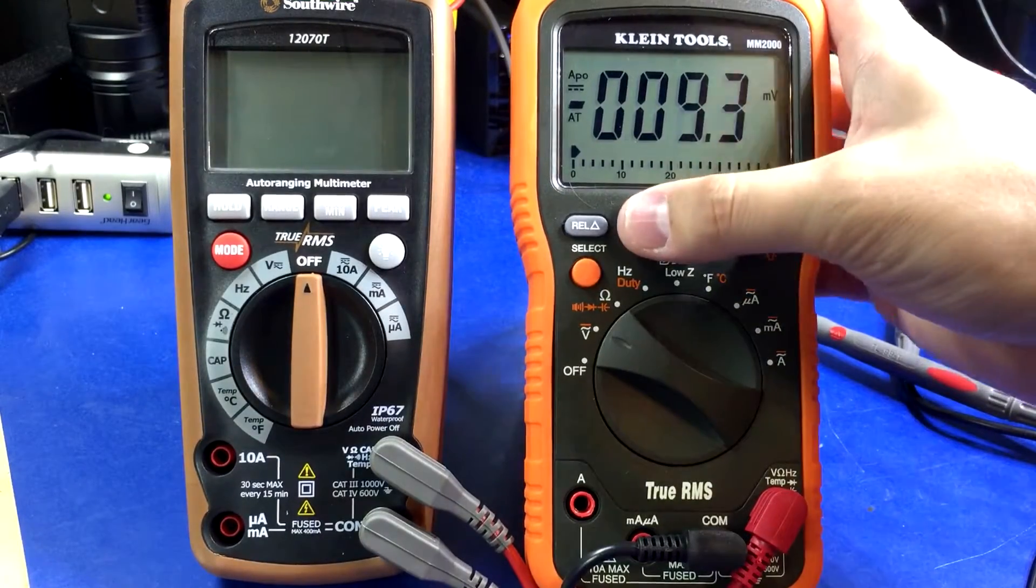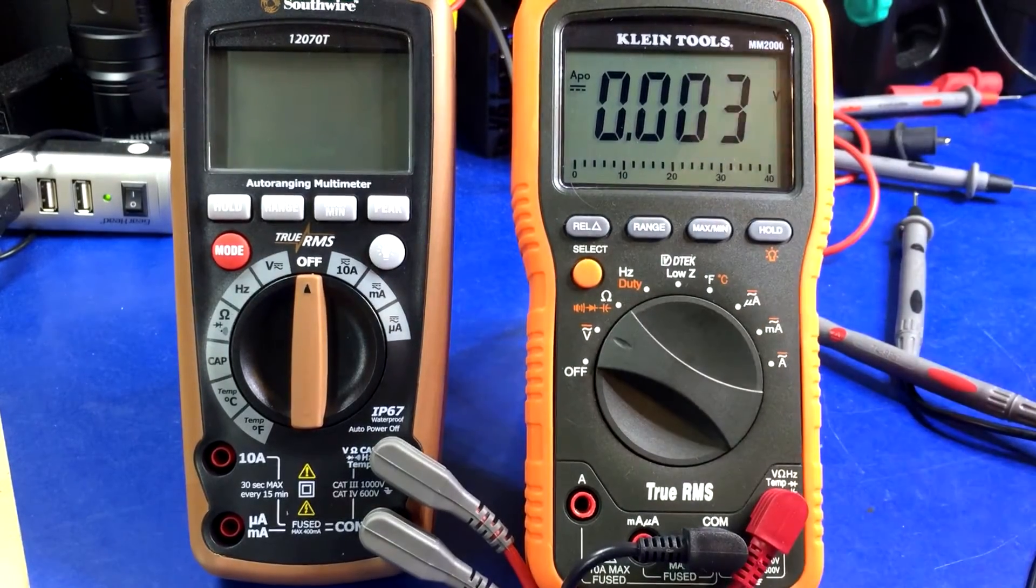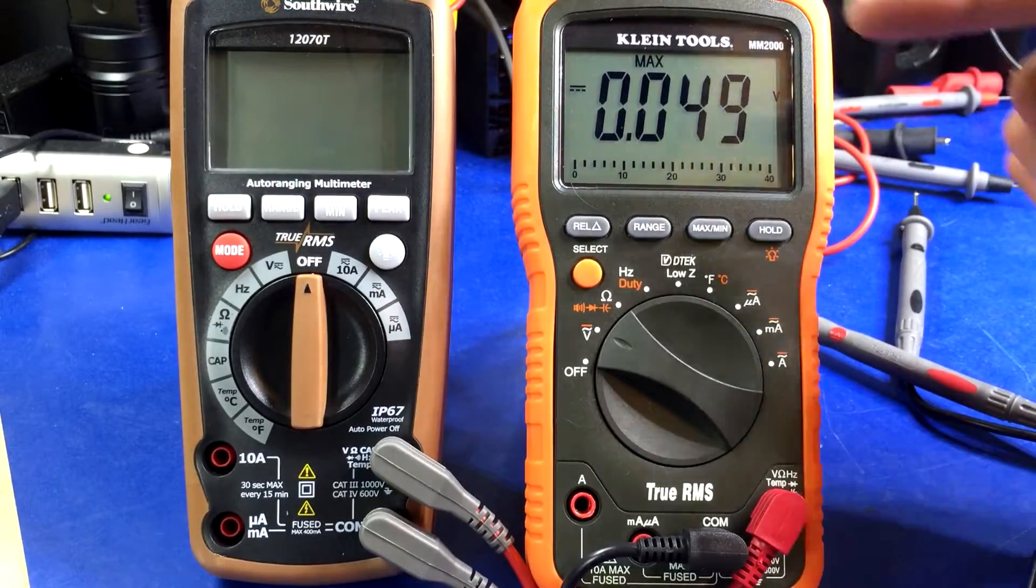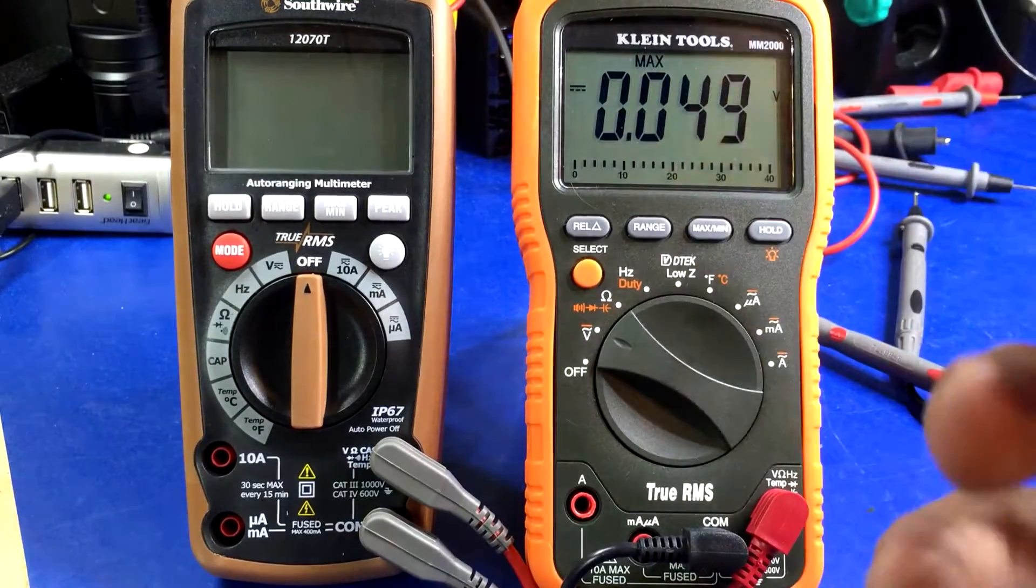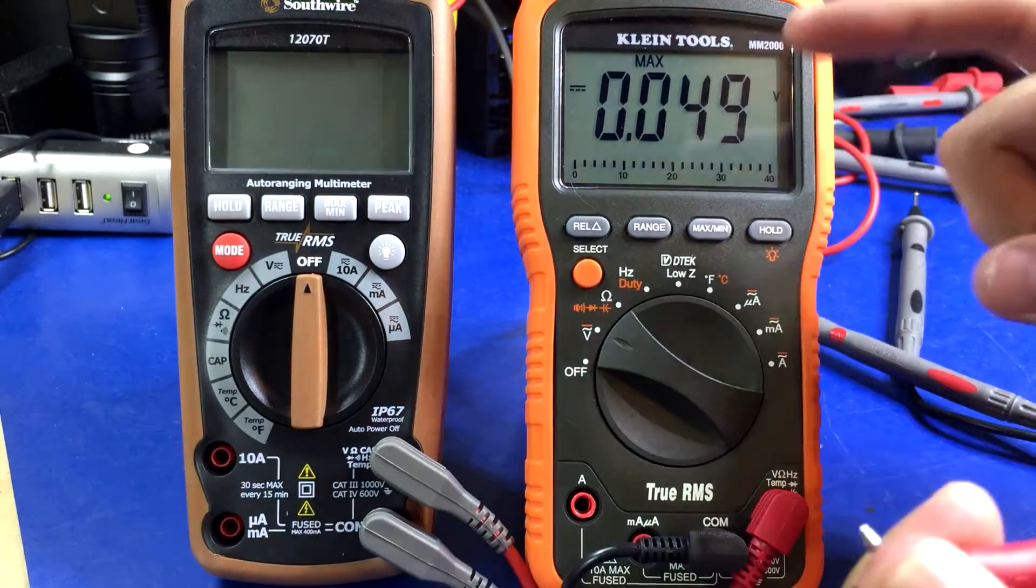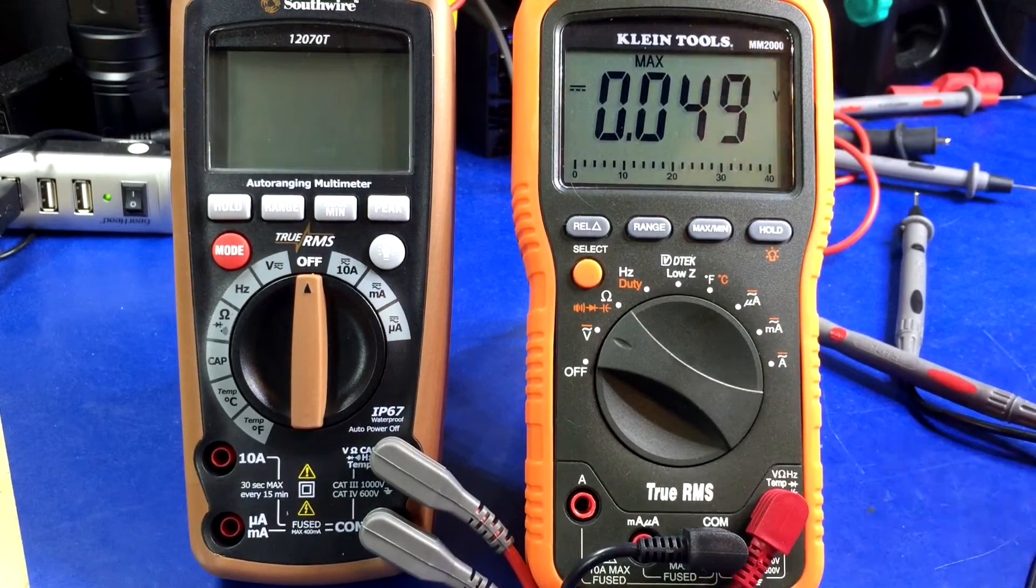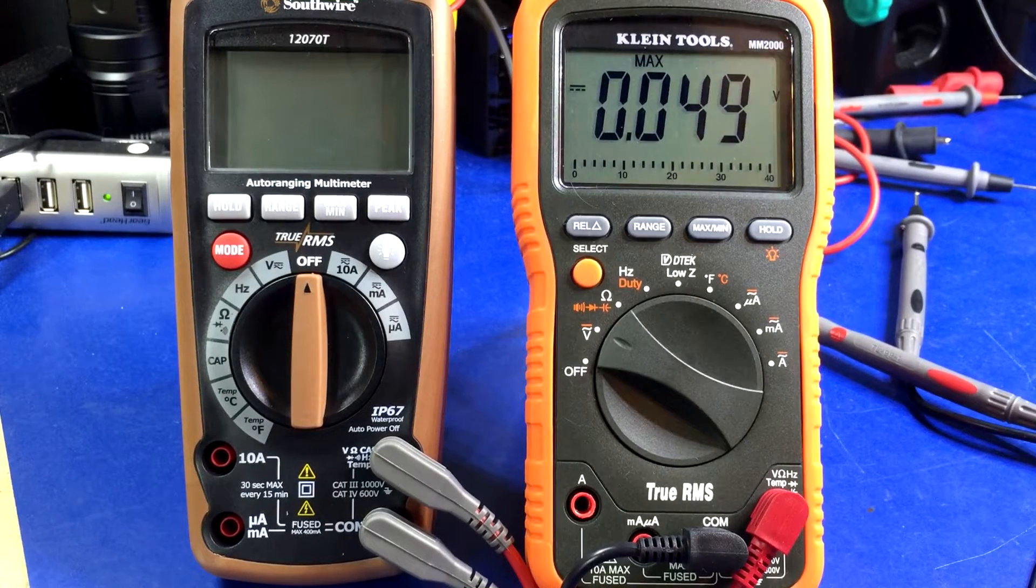So I need to basically touch it to my reference. Let's just manually range it. Okay, so now we're in the voltage range. We're going to hit min max. So now this is not what the probes are reading. Probes are shorted, should be reading zero. No, this isn't what the probes are reading. This is showing what the maximum recorded value is.